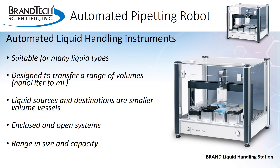Automated liquid handling systems include a wide range of instrumentation, from robots that take up very little space to those that can take up a whole room. Some systems, like the Braun liquid handling station, use air displacement liquid ends, which are suitable for many types of liquids. They have the ability to reproducibly compensate for liquids that would be a challenge with manually operated instruments. However, you do want to avoid chemicals that may be damaging to the materials and components of the instrument. The volume range for pipetting robots can range from nanoliter to milliliter volumes, and sources and destinations can range from something as small as a PCR tube to a 96, 384, or 1536 well microplate. For larger volumes, you can use reagent reservoirs that may hold up to 240 milliliter capacity.